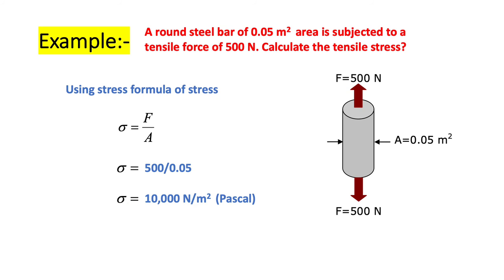Let's see an example here to calculate stress for a round steel bar of 0.05 meter square area subjected to a tensile force of 500 Newton. Stress can be easily calculated using stress formula, sigma equals F over A, divide 500 by 0.05, and the result is 10,000 Pascal.